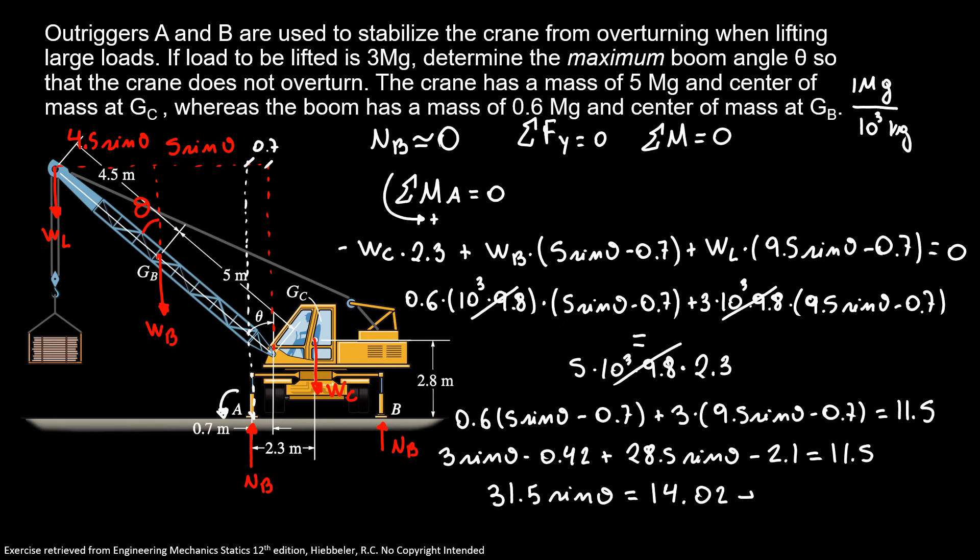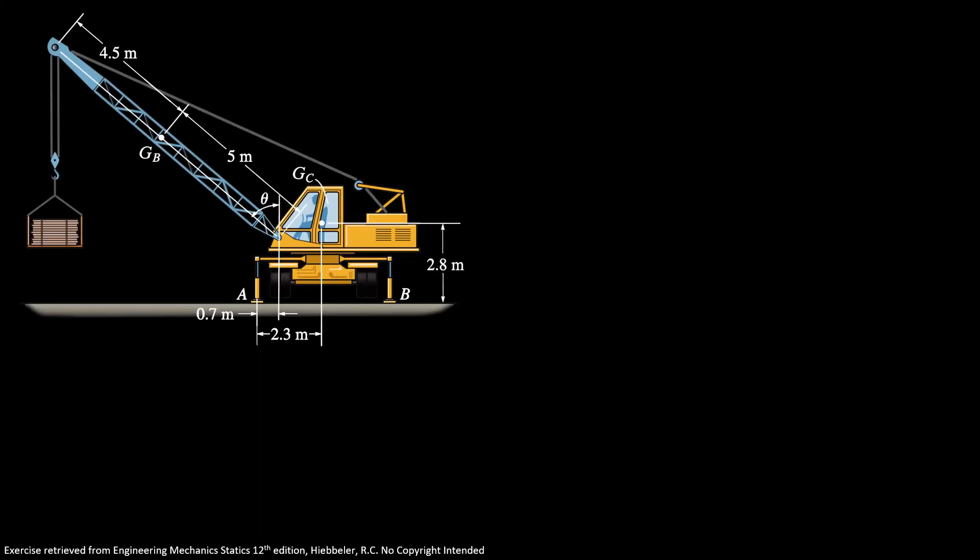So sine of theta is equal 14.02 over 31.5. So here in our next slide we have theta is equal 26.4 degrees. So this is the answer for our maximum theta.